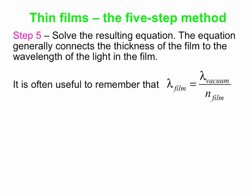Step 5: you now have an equation, and you solve for whatever you're trying to find — often the film thickness. This equation connects the thickness of the film to the wavelength of light in the film. If you know the wavelength in air or vacuum rather than in the film, remember that the wavelength in the film equals the vacuum wavelength divided by the index of refraction of the film. That's the basics of the five-step method, and in class we'll try a couple of examples.